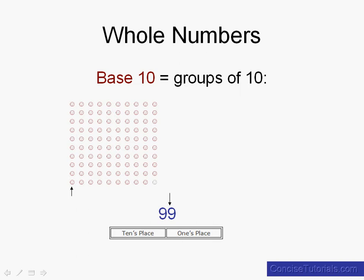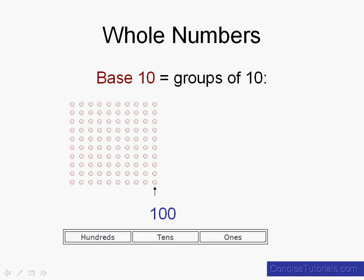Let's look at the last row — we've counted 1, 2, 3, 4, 5, 6, 7, 8, 9. So yes, we have 99 happy faces, and if we count one more we've got 100. This represents a one in the hundreds place, meaning we've counted through one group of 100 objects. We've got a zero in the tens place because we haven't counted any more rows of 10 beyond that 100, and a zero in the ones place because we haven't counted any additional happy faces beyond that group of 100.